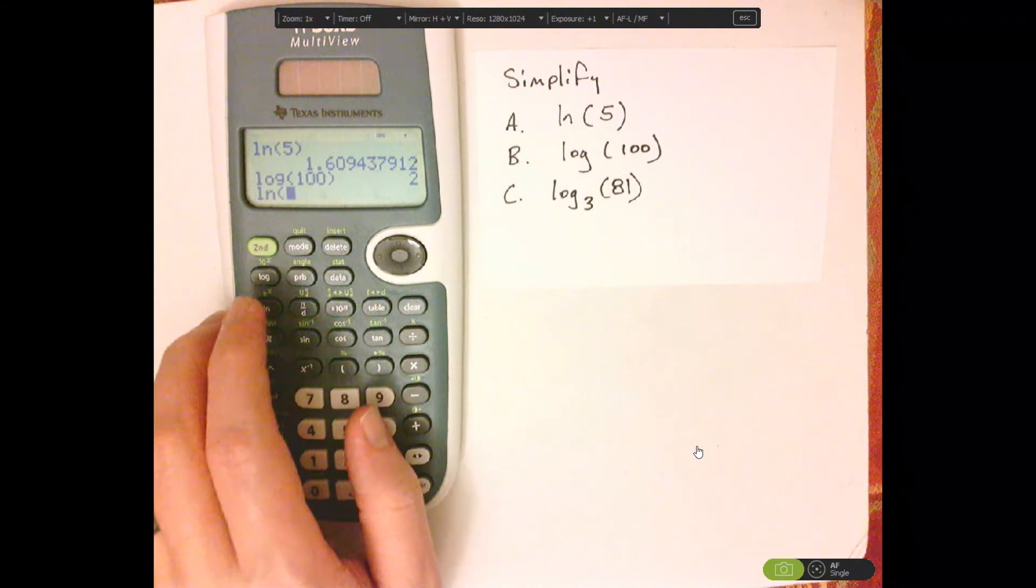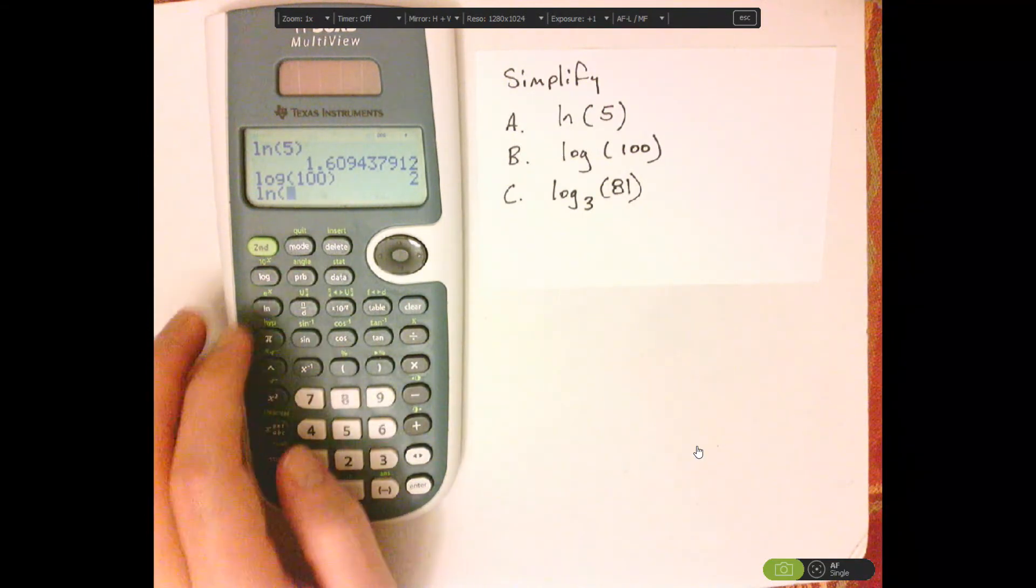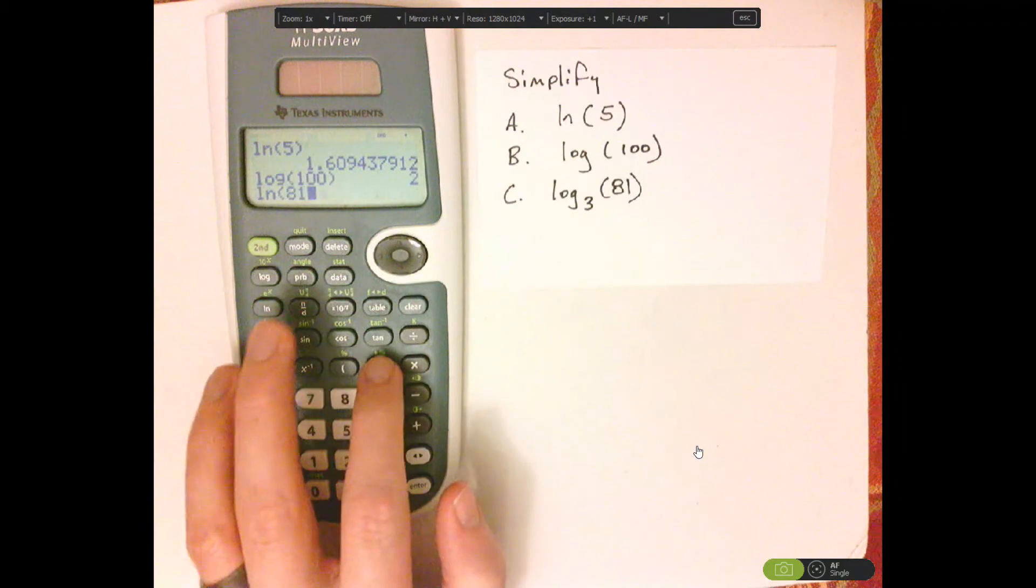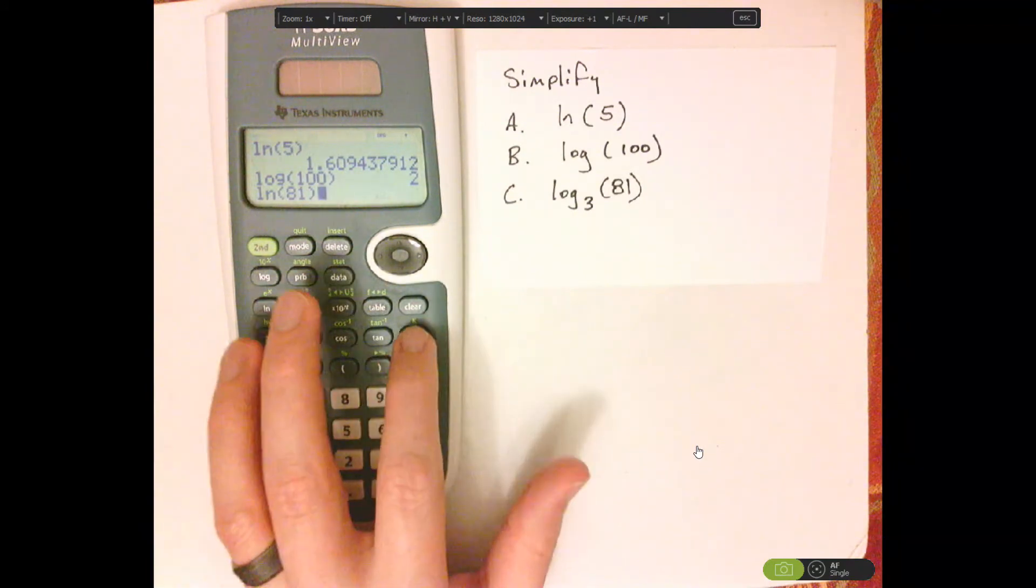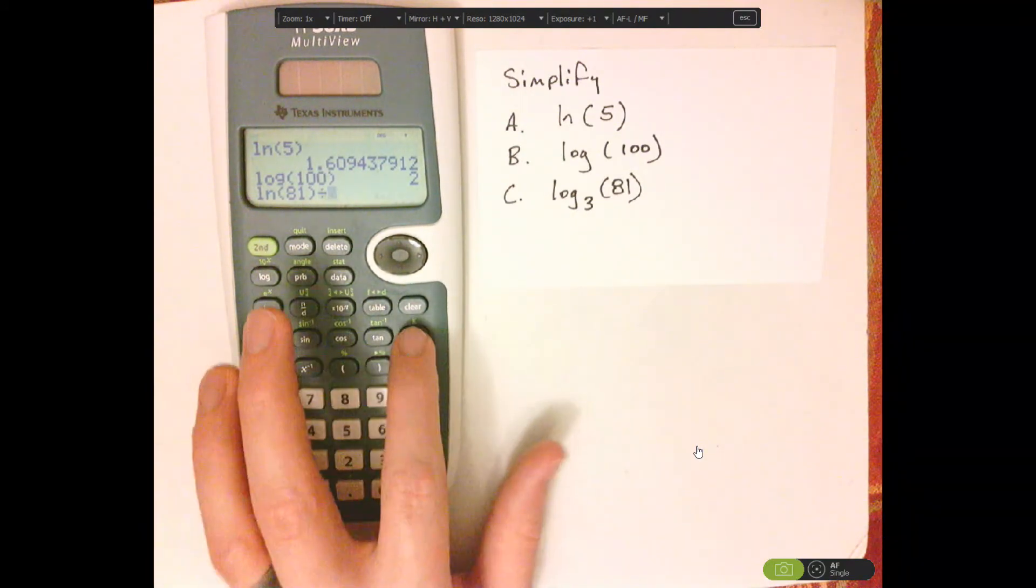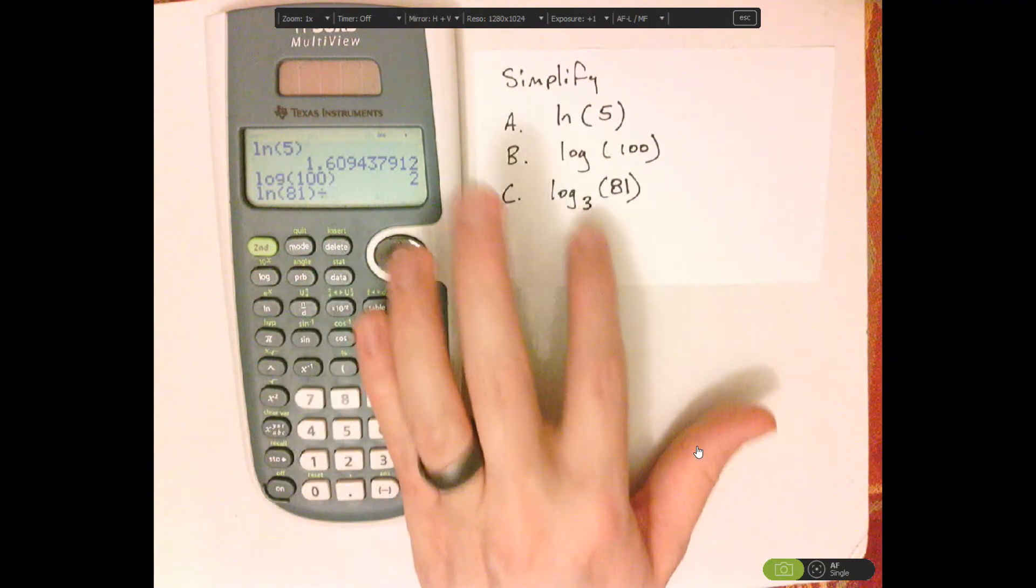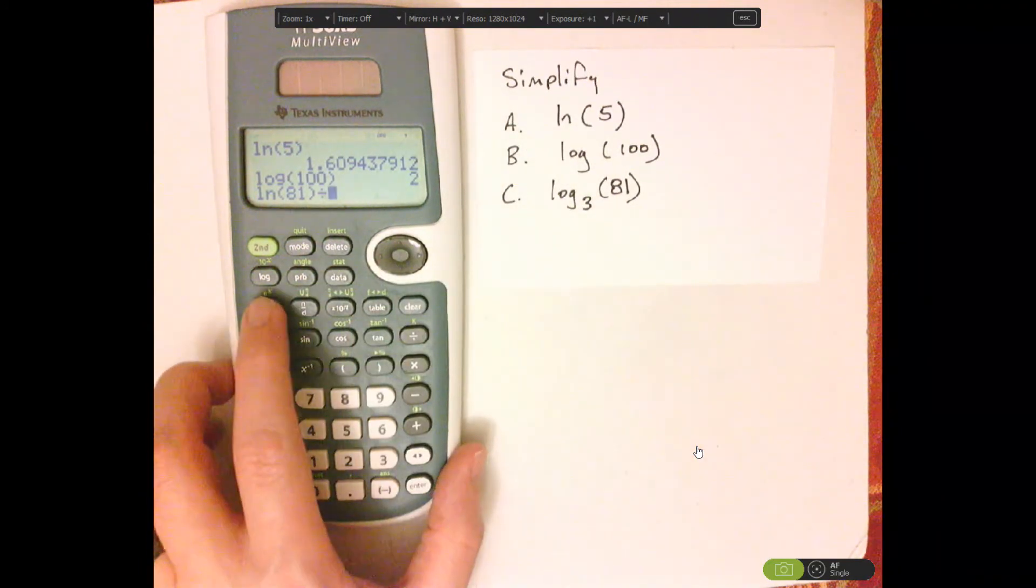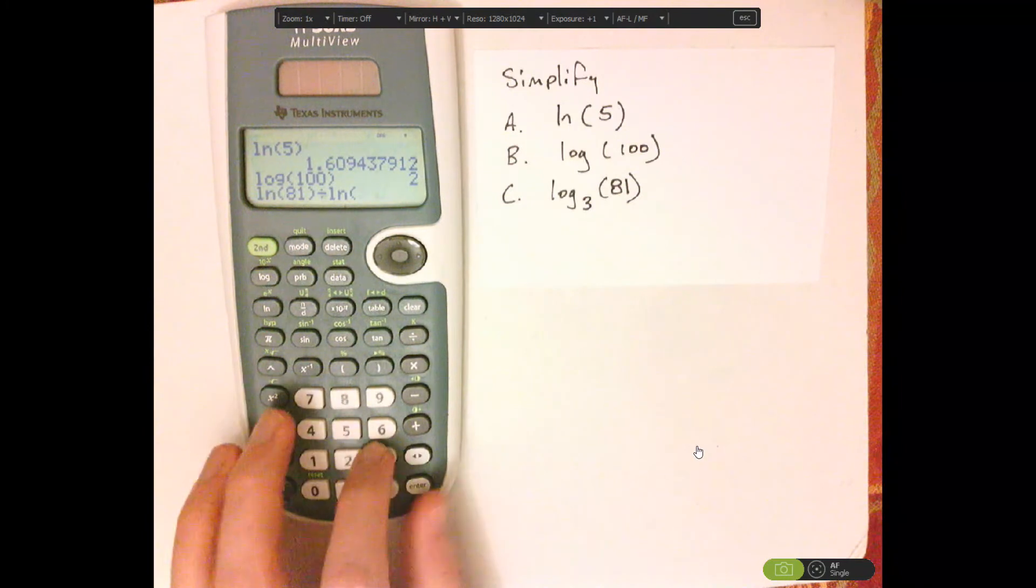So, I like to call it ln. ln of 81, close the parentheses. Now let's divide, push the division sign, and then natural log, or ln of 3.